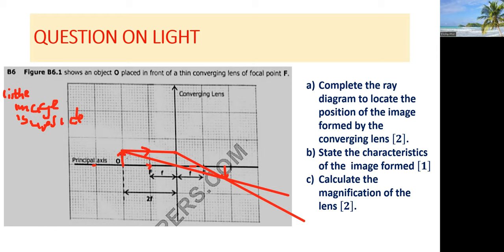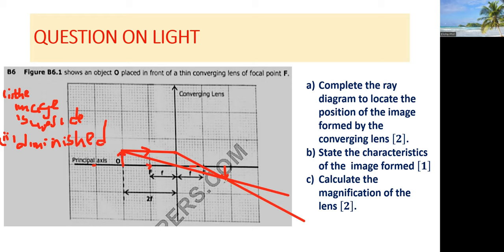The second characteristic is that the image is diminished, meaning the image is smaller than the object. The third characteristic is that the image is real, which means it can actually be formed on a screen.